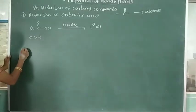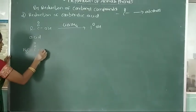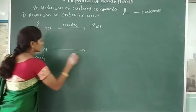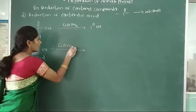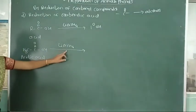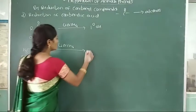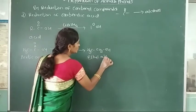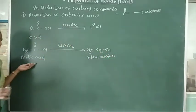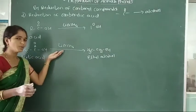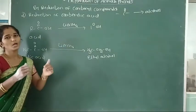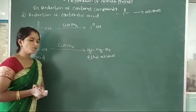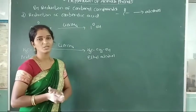For example, CH3COOH — this is acetic acid. This acetic acid is reduced with lithium aluminium hydride. Acetic acid is converted into CH3CH2OH, that is ethyl alcohol. Here acetic acid is reduced with lithium aluminium hydride to give formation of ethyl alcohol. In this reaction, lithium aluminium hydride is used as a reducing agent, but it is an expensive agent.